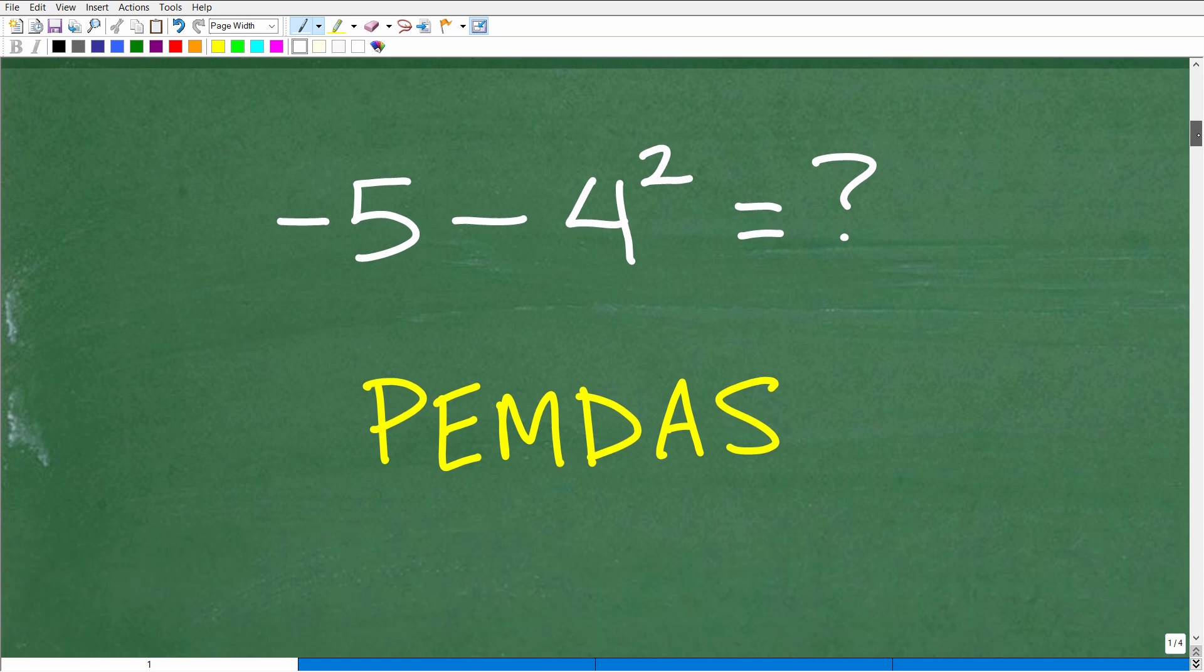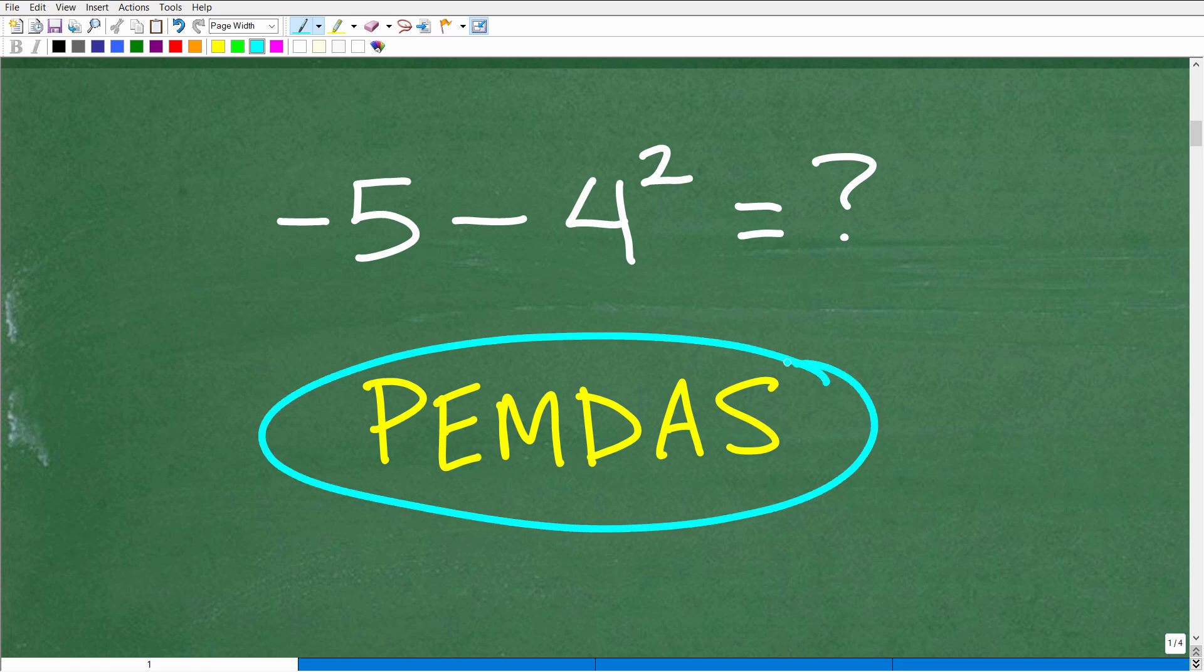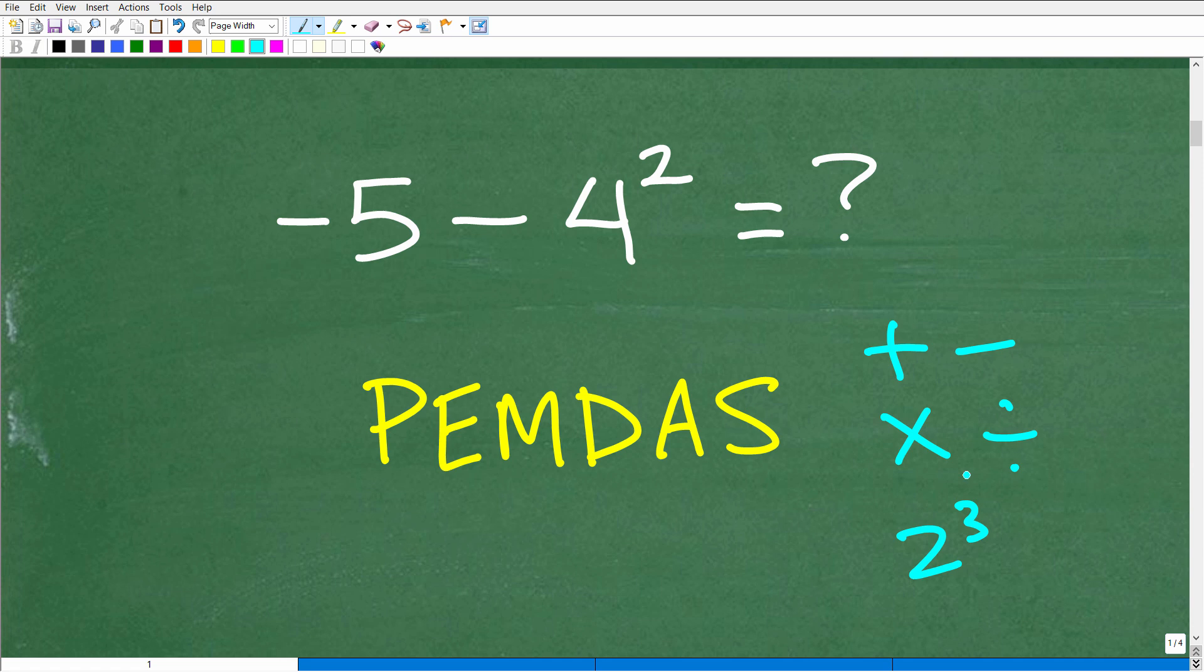Okay, so first things first. The first thing we need to do is consider the order of operations. Now hopefully you're familiar with this phrase. This is PEMDAS. It is the correct order of operations. Remember in mathematics, when we're adding, subtracting, multiplying, dividing, and taking powers, these are mathematical operations. And we need to know the correct order to do problems that have more than one operation in them. So in this particular problem, we have subtraction and we are taking a power, right?